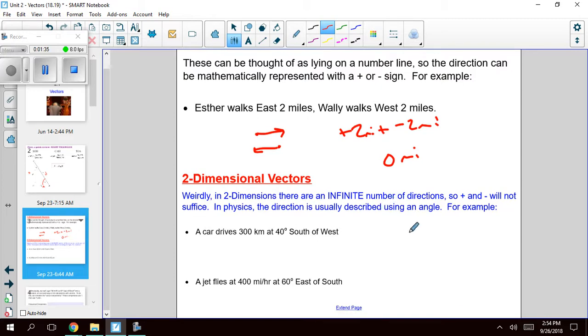let's say we have a car and it's driving 300 kilometers at 40 degrees south of west. So if we look at our cardinal directions here, this is south, this is north, east, west. We really can go anywhere. We don't have to just go north.